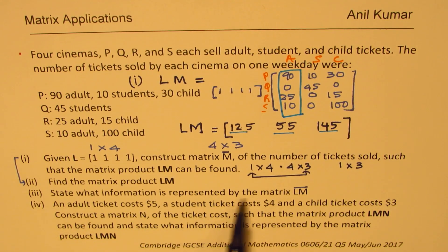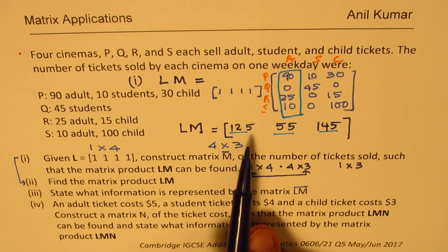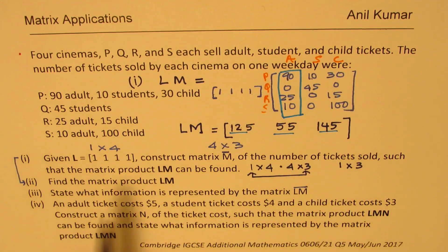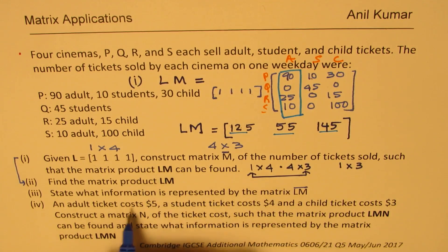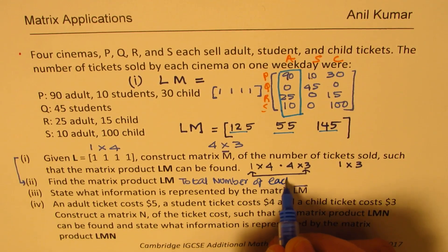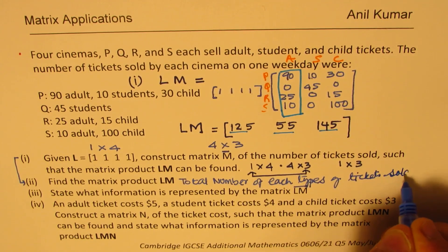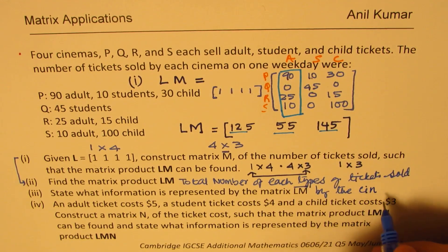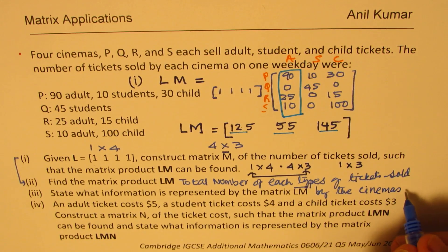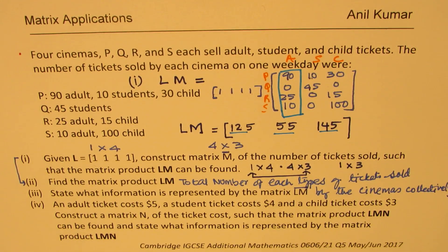State what information is represented by matrix LM. The answer is: it states the total number of each type of ticket sold by the four cinemas collectively. So 125 tickets were sold for adults, 55 for students, and 145 for children across all cinemas combined.